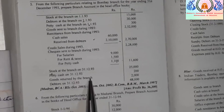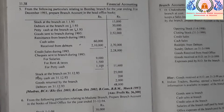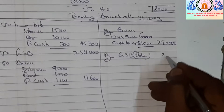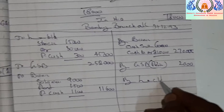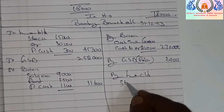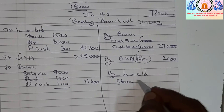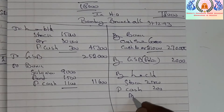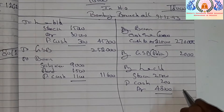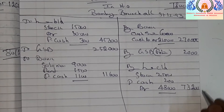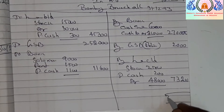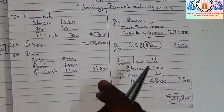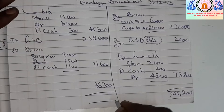Closing information is given: closing stock, closing petty cash, and closing debtors. Goods returned to head office by the branch is 2,000. Balance carried down — closing assets: stock 25,000, petty cash 200, debtors 48,000, totalling 73,200. The grand total comes to 3,45,200 rupees on both sides.